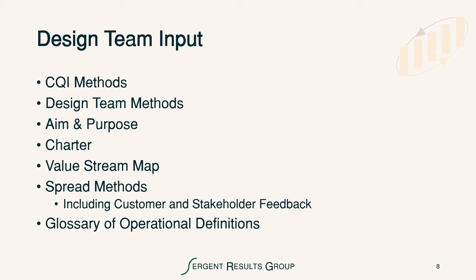Input to design team work starts with learning CQI methods. Continual quality improvement is the foundation of this work. Design team methods are also critical, along with the functions necessary for improvement as part of a team. We use the aim and purpose that comes in the charter. The team is permitted, with approval of the guiding council or the executive sponsors, to change their charter — but it's really important to keep the scope from creeping into areas not part of the intentions of the executive sponsors. We also start with input from the value stream map.